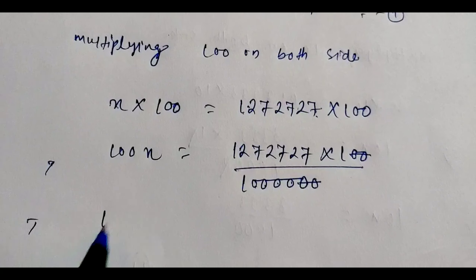So 99x equals 126, and dividing both sides by 99, we get x equals 126 by 99. Simplifying, 126 divided by 9 is 14 and 99 divided by 9 is 11. Therefore x equals 14 by 11. This is our rational number in the form P by Q, where Q is not equal to zero. Thank you.